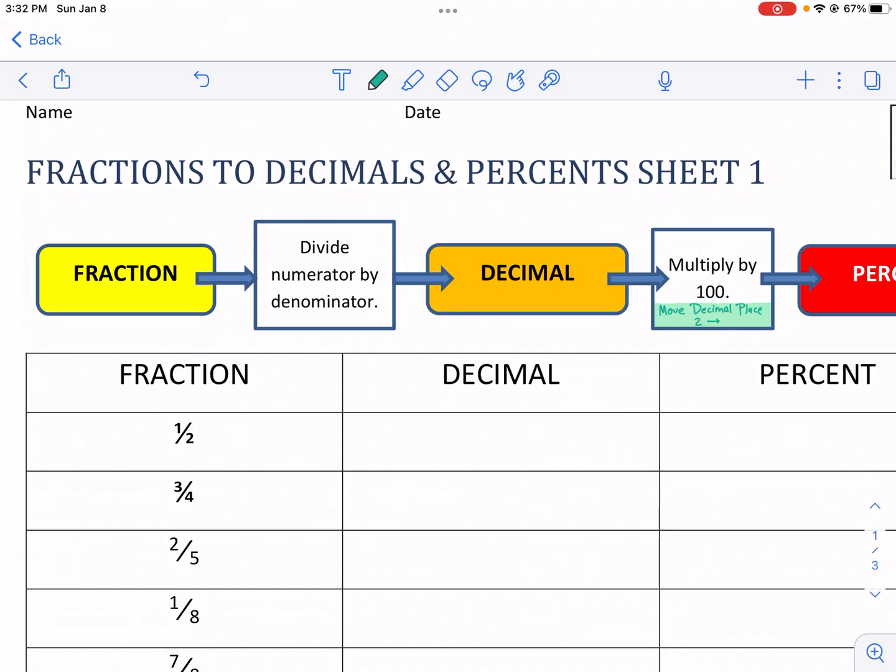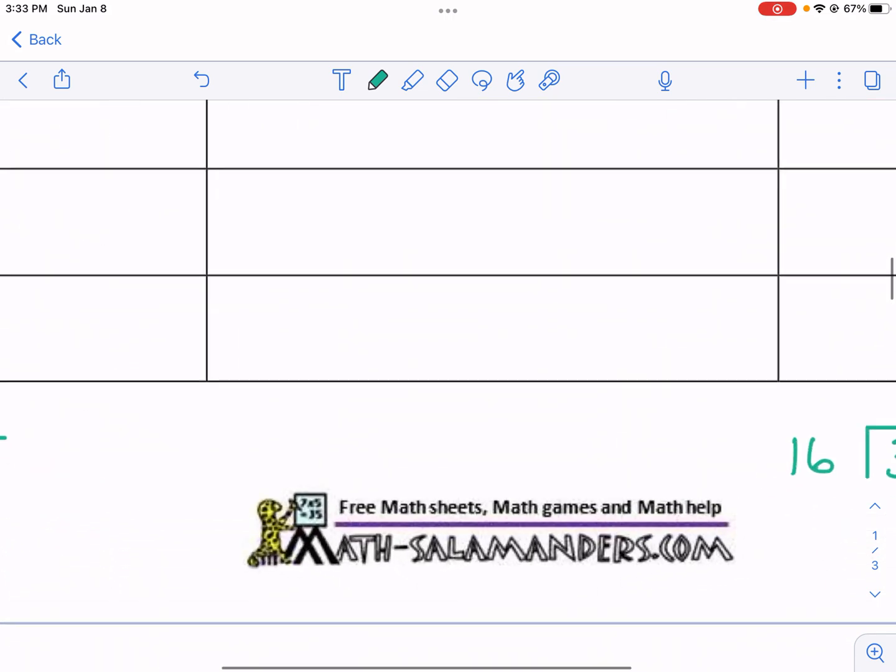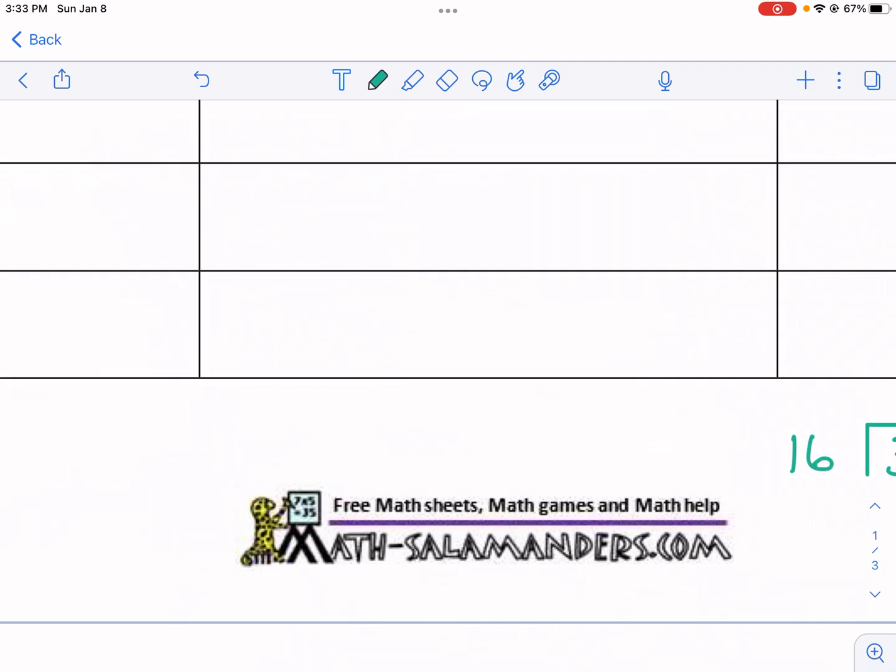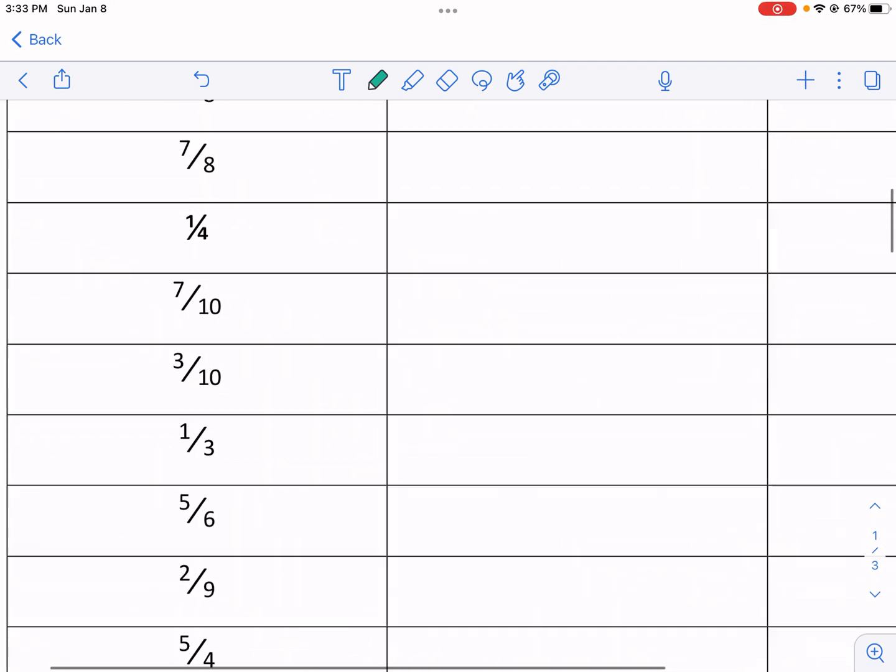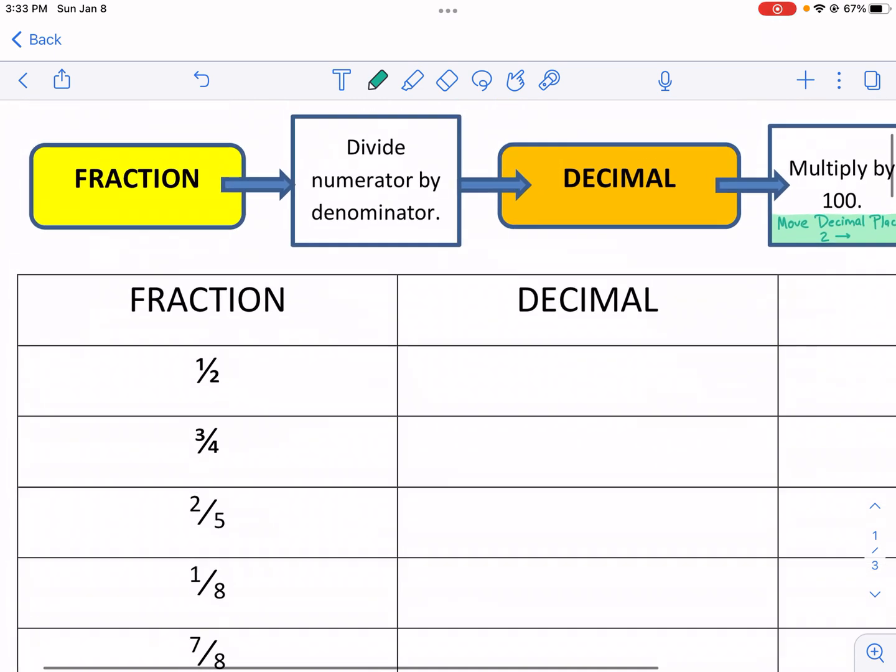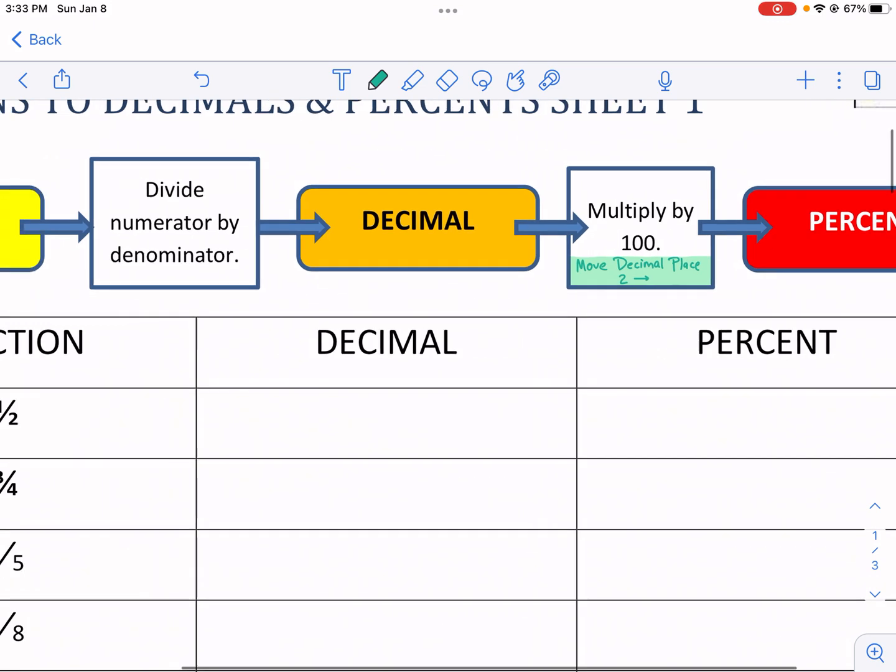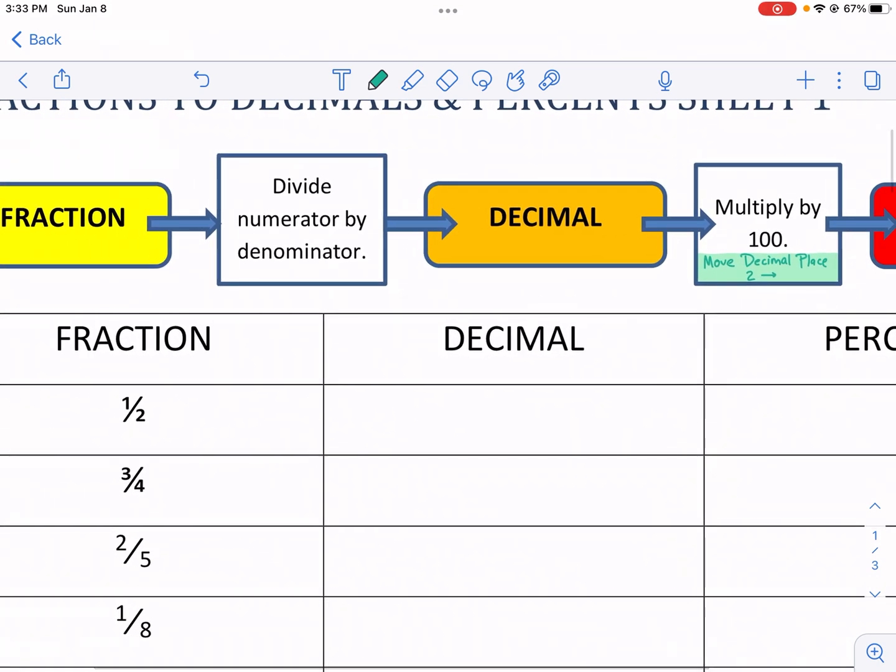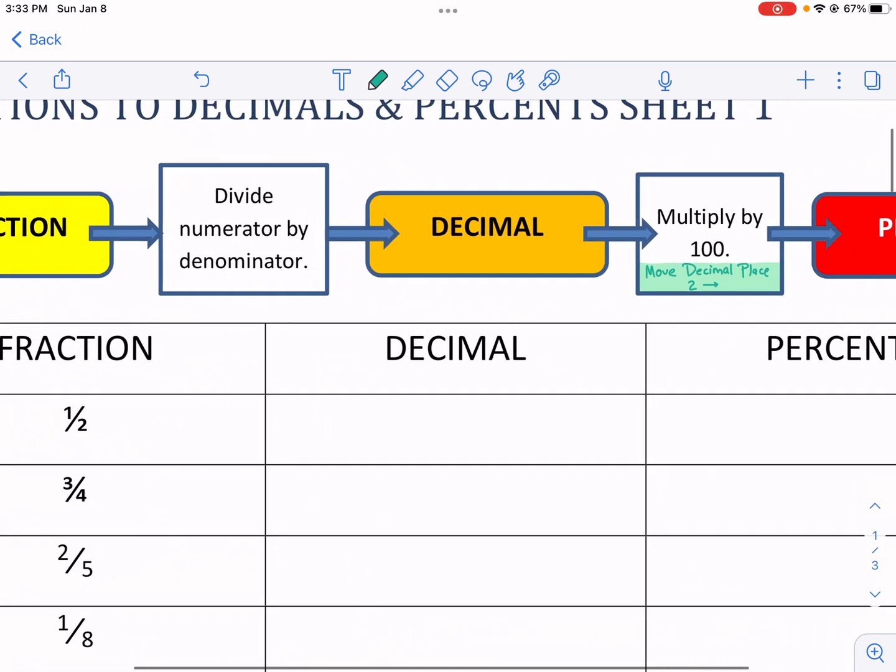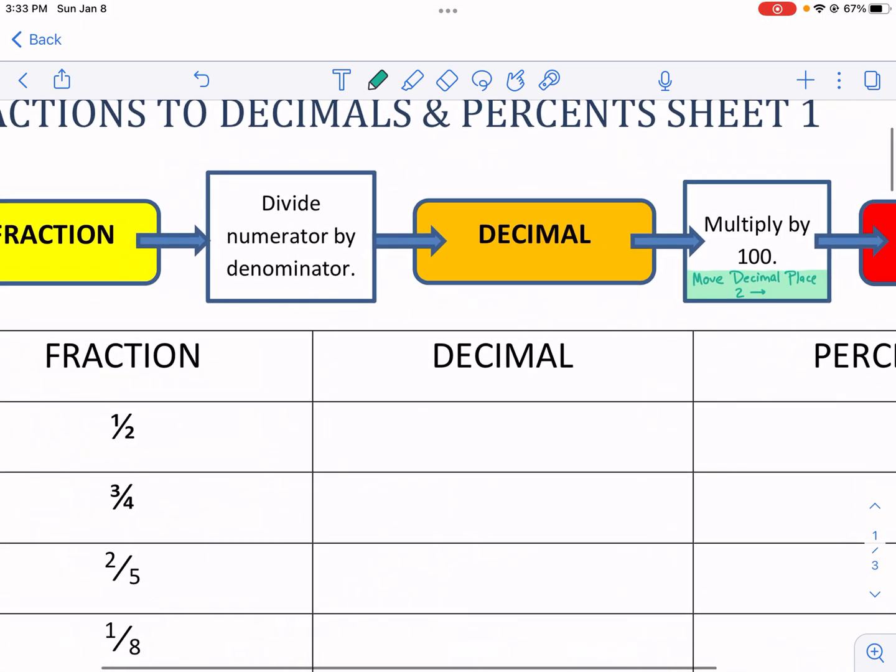Hi, this is Mr. West, and today you're watching a walkthrough video for fractions to decimals and percents sheet one. This is from mathstamanders.com. They have tons of great resources to make sure to check them out. Now with this worksheet, I really like it because we're going from a fraction to a decimal to percent, which are all very useful things. We're specifically going in this order today, and this is a great worksheet that lays out how to do this.